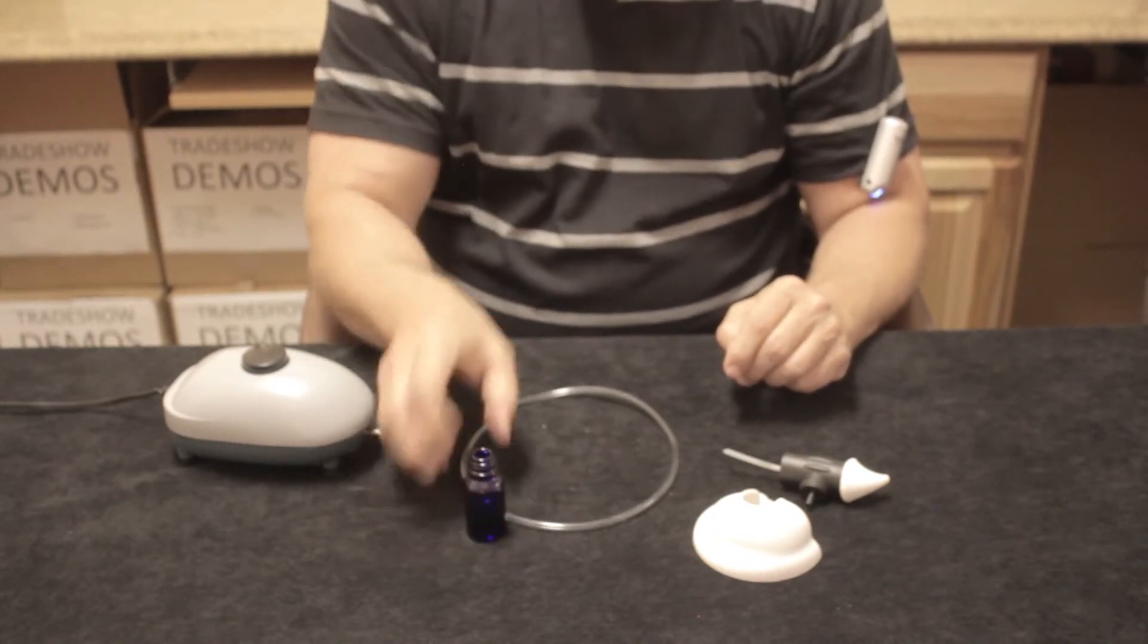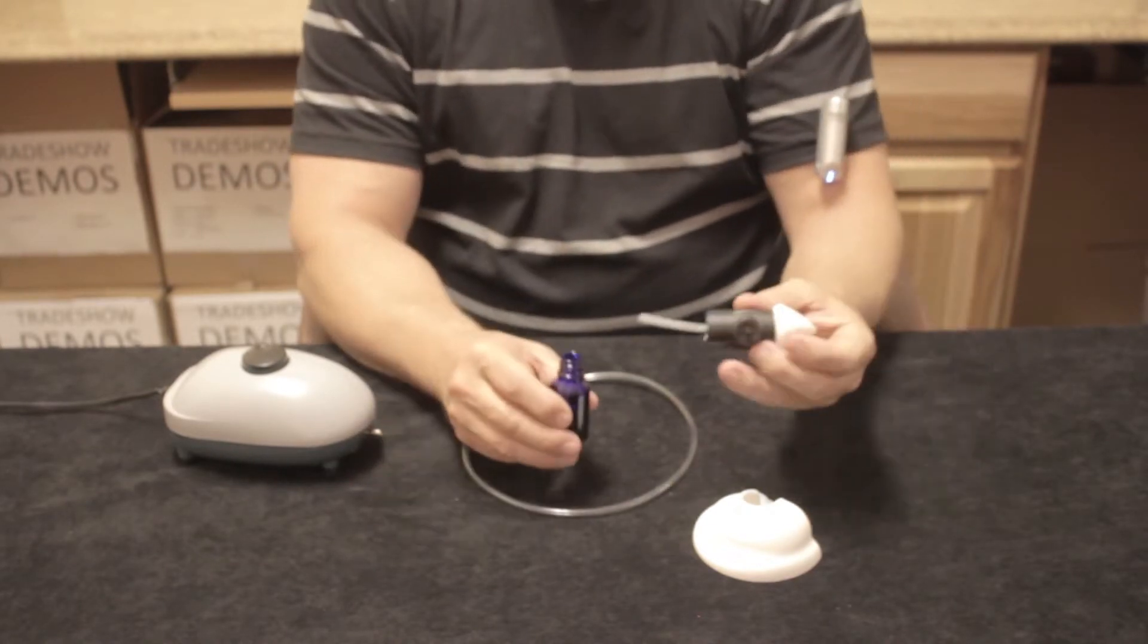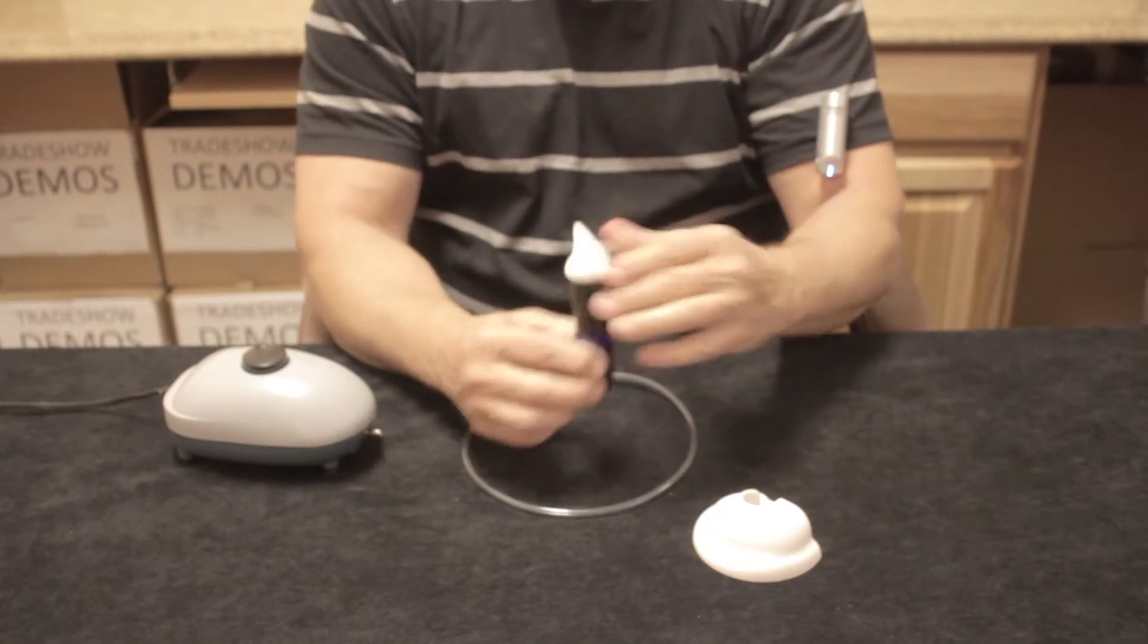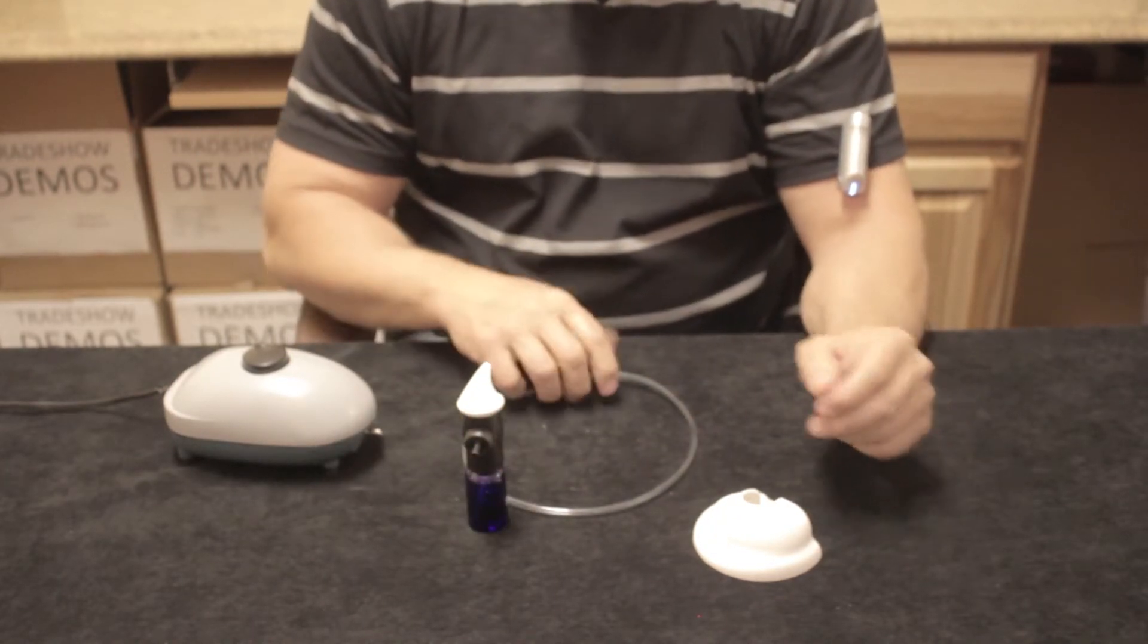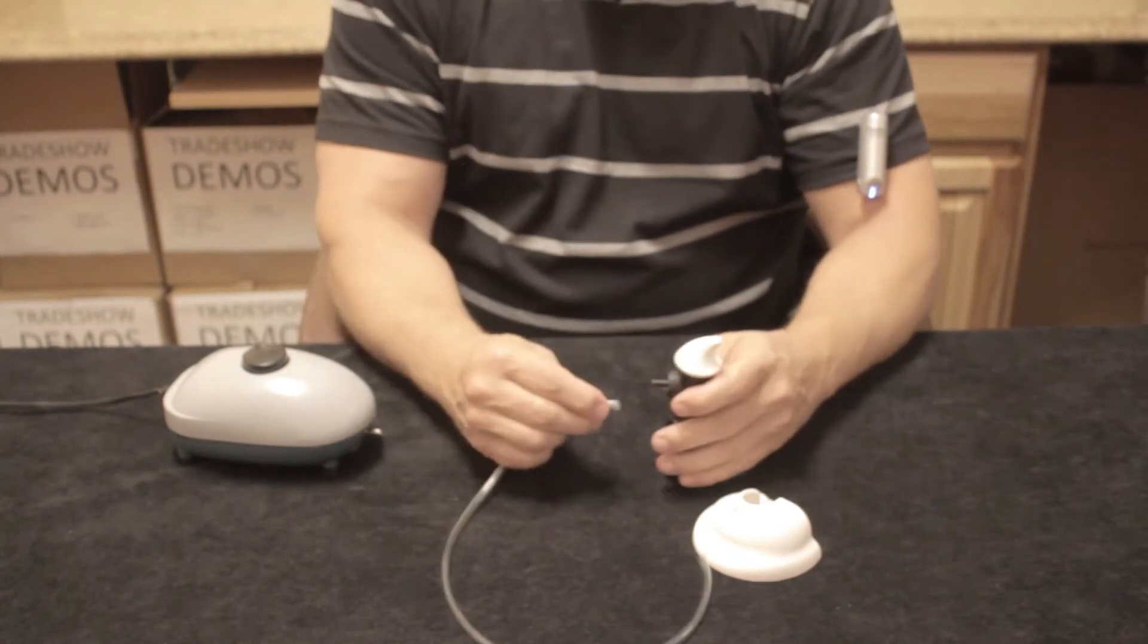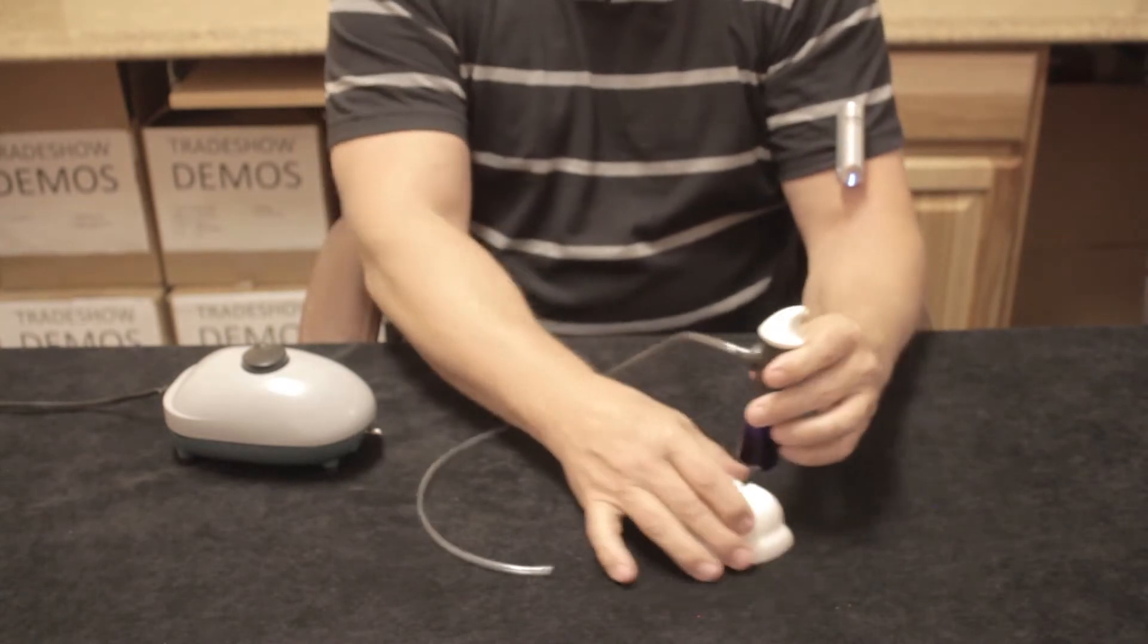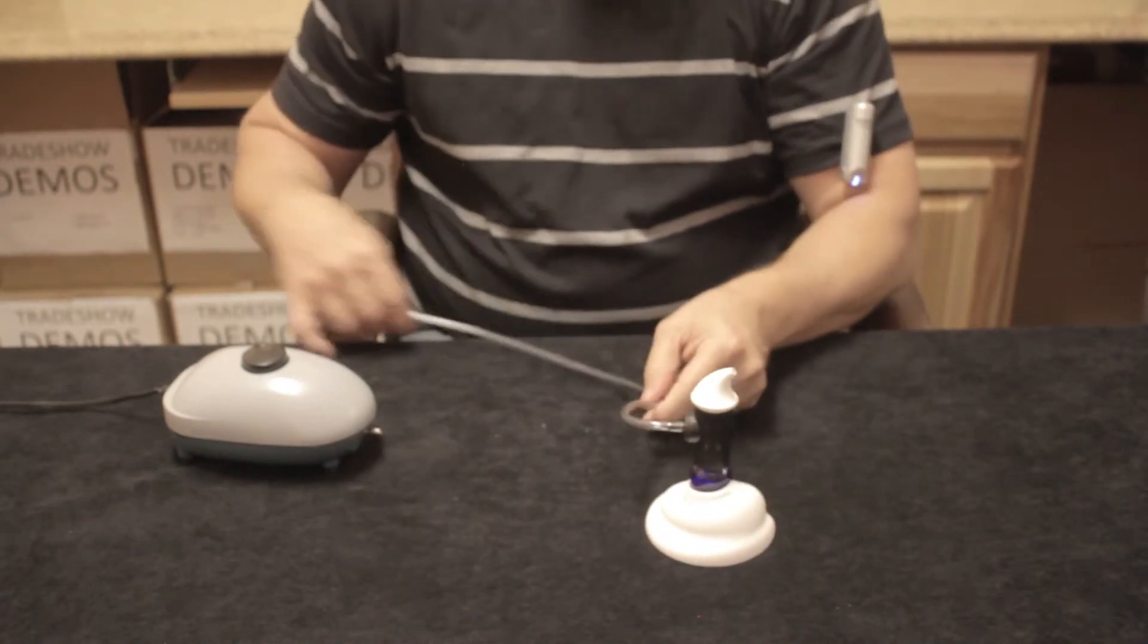I'm going to simply attach my atomizer to my oil bottle. You'll notice there's no mixing, I don't have to touch the oil, and it's ready to go. Then I'll attach my hose to the atomizer. I will slip my atomizer into the base. Now I don't have to worry about it staying up.